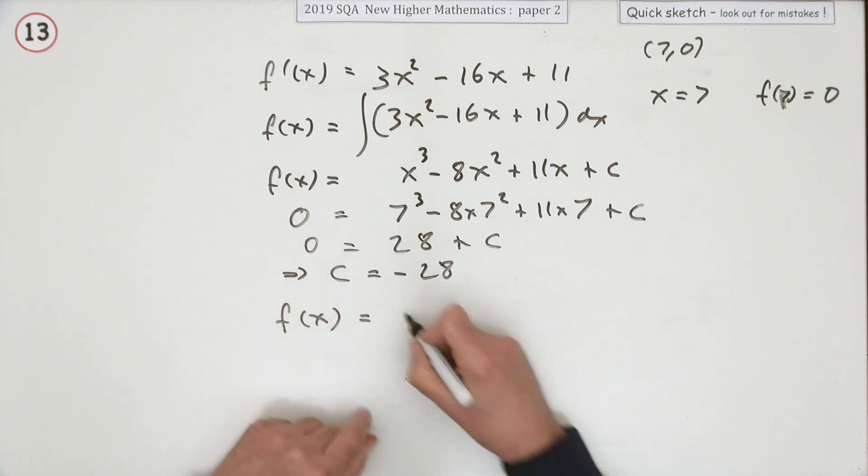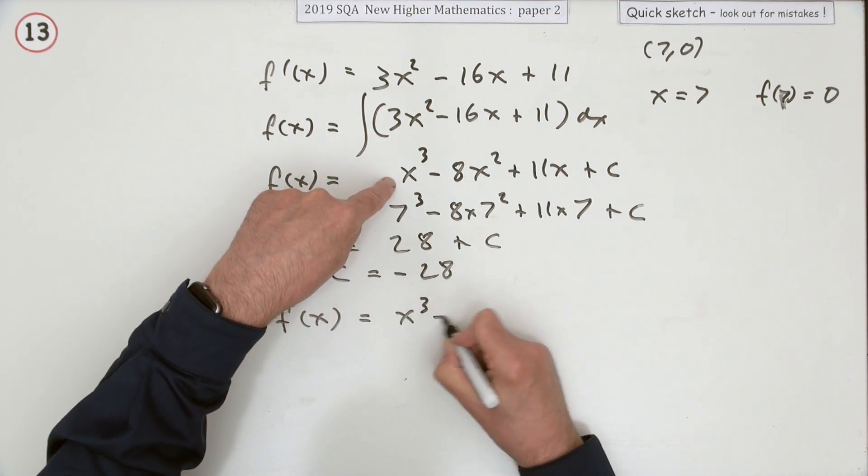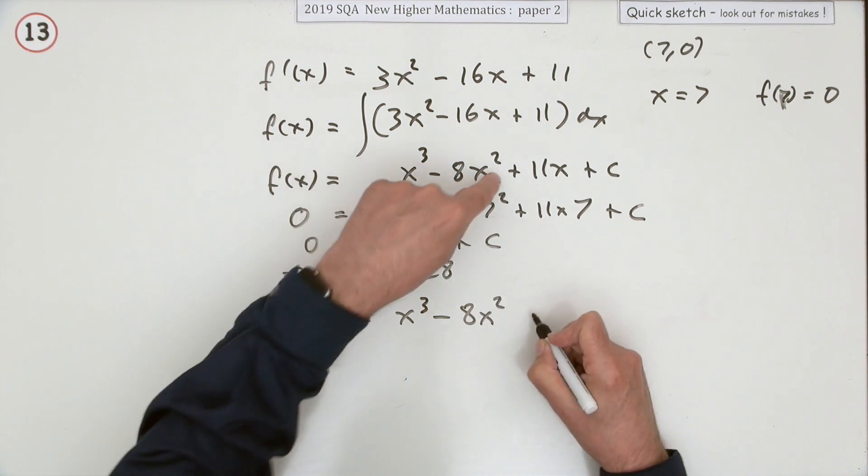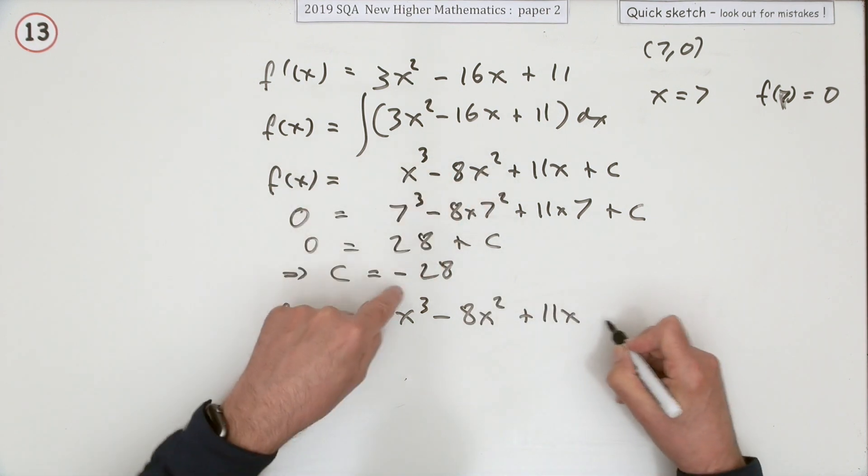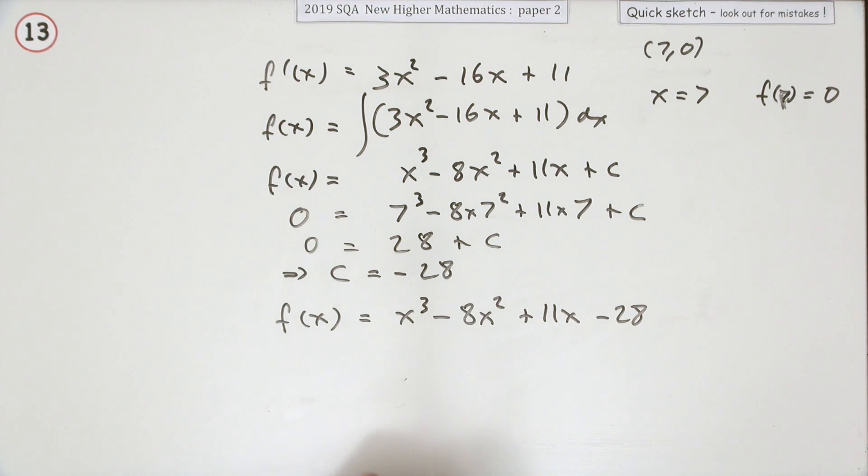Now I can finish it off. f of x equals x cubed minus 8x squared plus 11x minus 28. Now that doesn't seem like five marks worth.